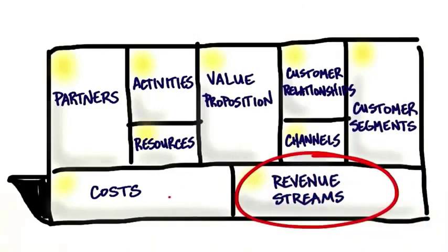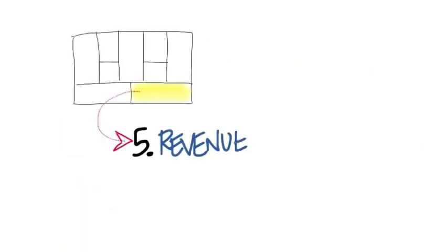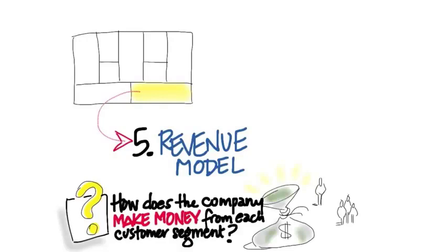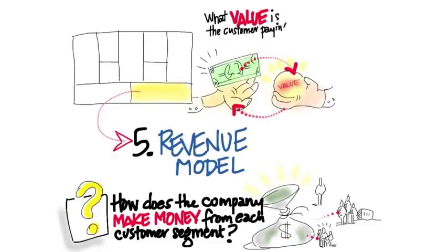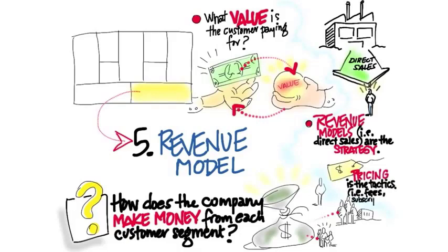The next thing is revenue streams. How do you actually make money from your product or service being sold to customer segments? Revenue streams ask: what value is the customer paying for? It has you think about the strategy of how you'll capture that value. Is it a direct sale based on price? A freemium model where you give away the product free and hope some portion converts later? A license or subscription model? That revenue model is different from pricing tactics — the actual dollar, pound, or euro amount you'll charge. The only way to figure this out is interacting with tens, hundreds, or thousands of customers.